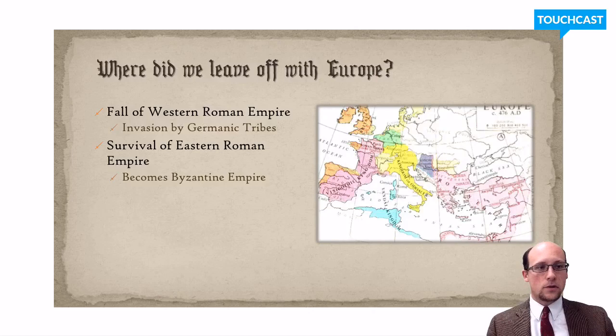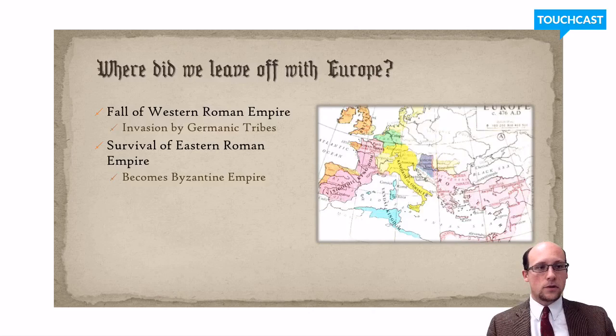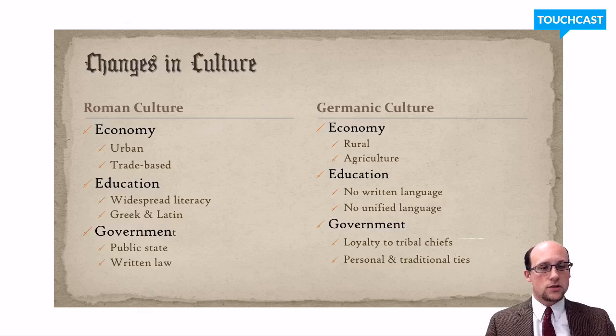We talked about how the Middle Ages were a transition from the Classical period of Ancient Roman and Greek civilization to something different — that's what we're going to try to figure out. So let's look at a few key changes, comparing Roman culture to the new Germanic culture that was coming in.